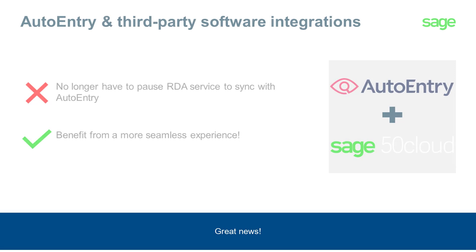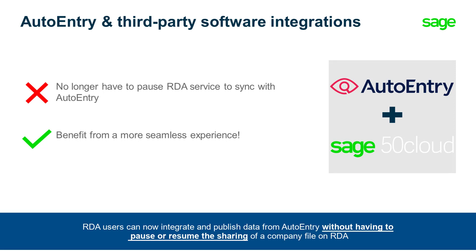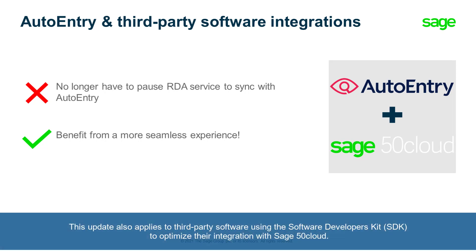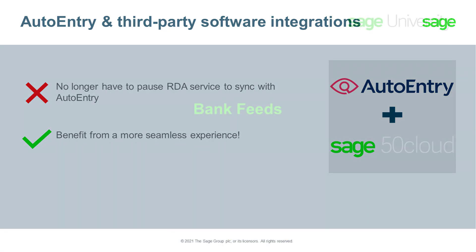Great news! With release 2021.2, RDA customers using auto-entry can now enjoy a more seamless experience and get the most out of the many benefits offered when using this cloud-based solution. RDA users can now integrate and publish data from auto-entry to a shared company file or shared client file in Sage 50 cloud without having the limitation of having to pause and resume the remote data access service. This update also applies to third-party software using the software developers kit to optimize their integration with Sage 50 cloud. Please refer to your third-party developers for more information.